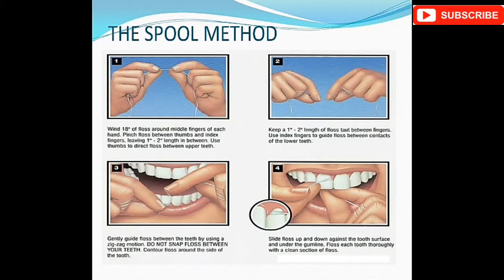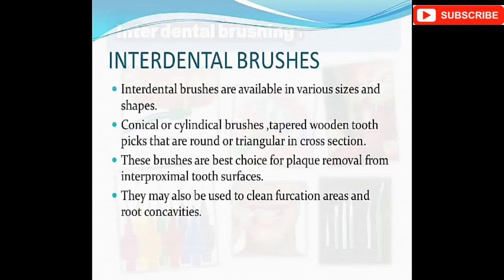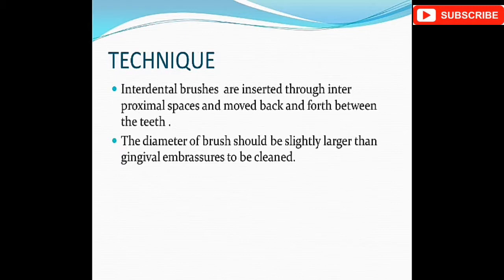In the spool method, the floss is wound around the fingers and moved back and forth in the proximal areas of each tooth. In the loop method, the floss is made about 45 centimeters long and both ends are tied securely with three knots. Interdental brushes are available in various sizes and shapes — conical or cylindrical, or tapered wooden picks that are round or triangular in cross-section. They are the best choice for plaque removal from interproximal tooth surfaces and for cleaning furcation areas. The brush diameter should be slightly larger than the gingival embrasure.